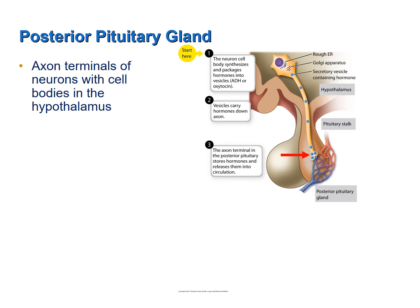Axon terminals are found in the posterior pituitary gland, and these axon terminals belong to neurons whose cell bodies are located in the hypothalamus. The hormones ADH and oxytocin are produced and packaged into secretory vesicles in those cell bodies. The secretory vesicles then move through the axon of the neuron, which extends through the pituitary stalk into the axon terminals found in the posterior pituitary gland.